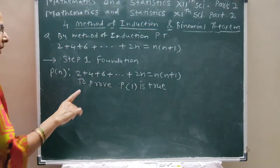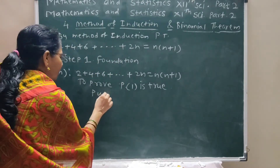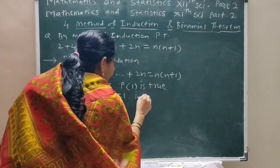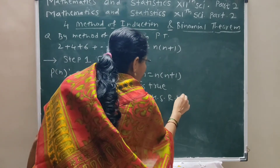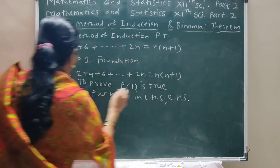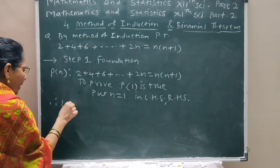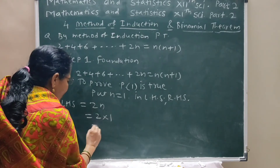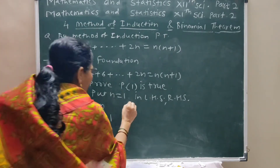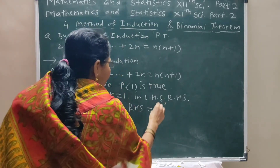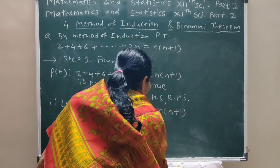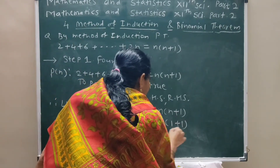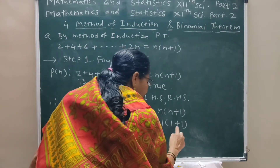To prove P(1) is true, put n = 1 in LHS and RHS. Therefore LHS = 2n = 2×1 = 2. RHS = n(n+1) = 1×(1+1) = 1×2 = 2.